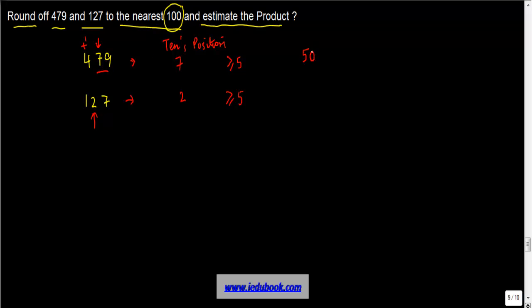In the second case, 2 is not greater than or equal to 5, hence this property is not true. So we don't add anything to the hundreds place; we write it as it is, and the other two we just put as zeros. Then you need to estimate the product.